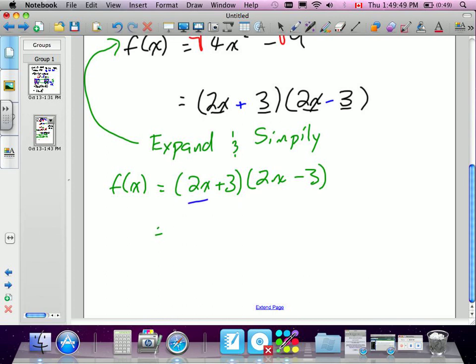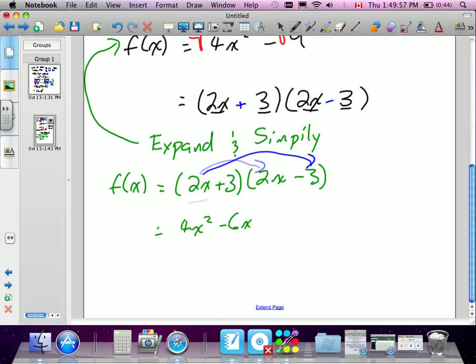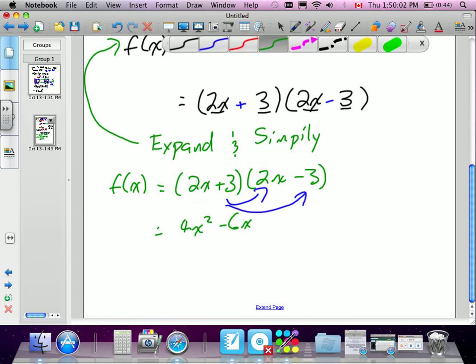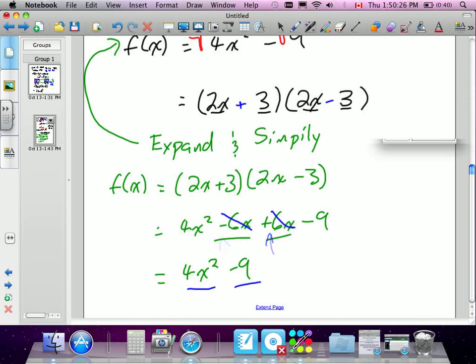So when we do FOIL, I'm going to multiply this number by both. So I get 4x squared minus 6x. Then I'm going to multiply the 3 by both. In which case, I'm going to get plus 6x minus 9, 3 times 3. When I combine like terms, negative 6 and positive 6 will cancel each other out. So I get 4x squared minus 9. The reason we have a plus and a minus is so that our middle terms cancel each other out. One's a plus and one's a minus. They'll cancel out. So we'll have only our A and our C term.